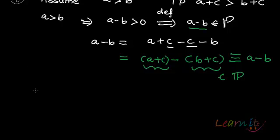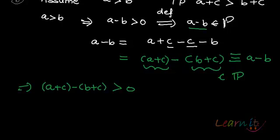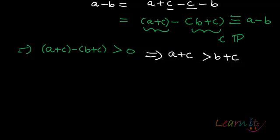It's basic algebra. That will mean A plus C minus B plus C is greater than 0, and that means A plus C is greater than B plus C. What we are doing is actually trying to prove certain obvious things — and that's what real analysis is all about. That's the beauty of real analysis: you actually try to prove many obvious things.